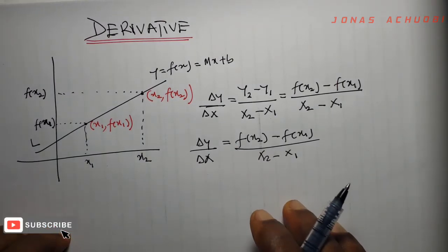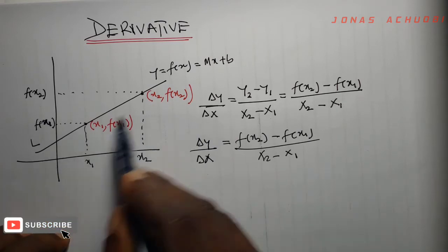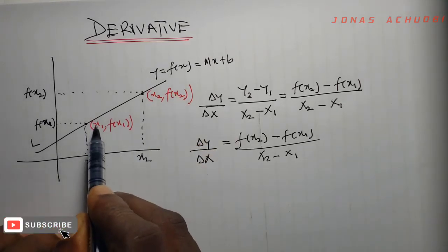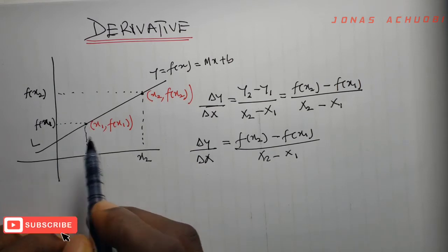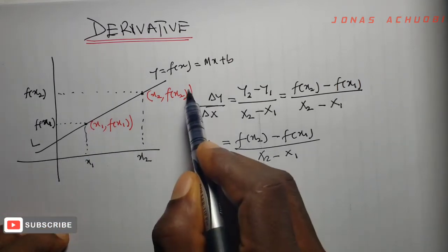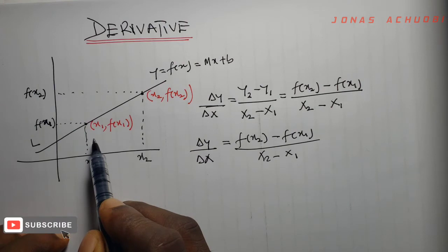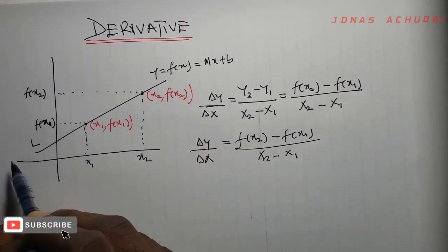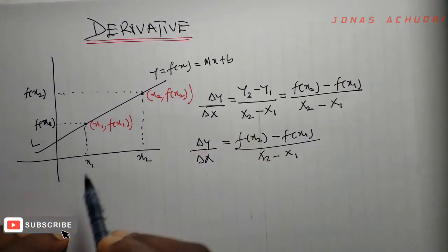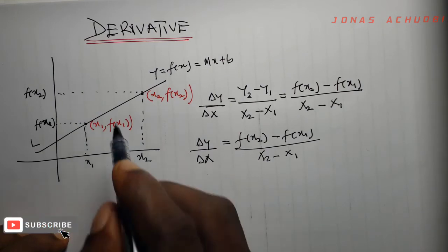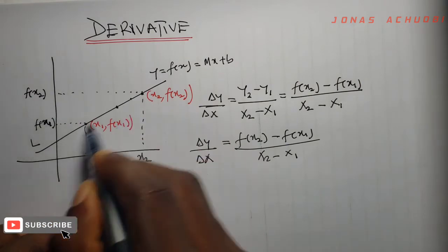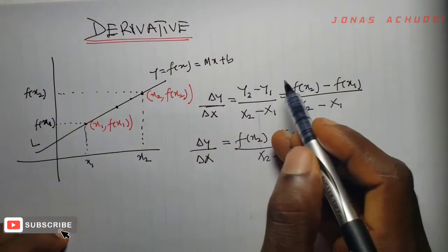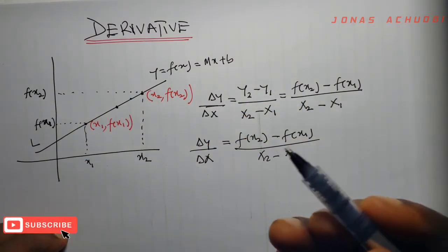The comment I wish to make here is this: on this straight line, the slope of this point x1, f of x1, is the same as the slope of any other point on the straight line. Because on a straight line, the slope is equal for every point on that line. So if I pick any point to find the slope, the slope will be the same. For a straight line, we see that the slope is constant.